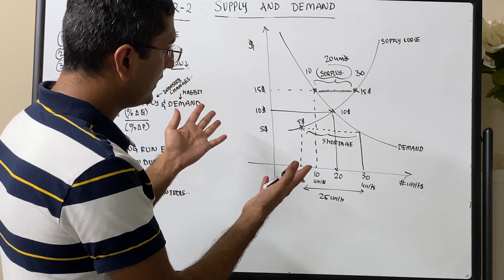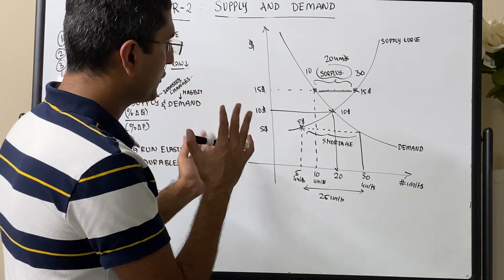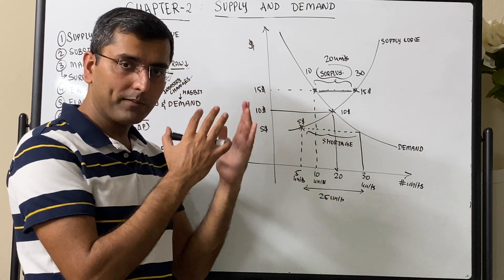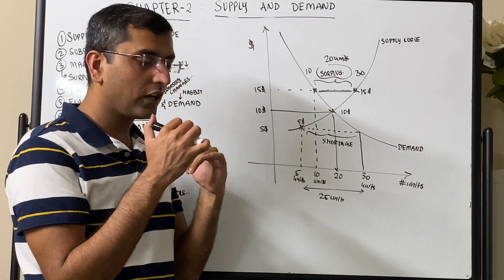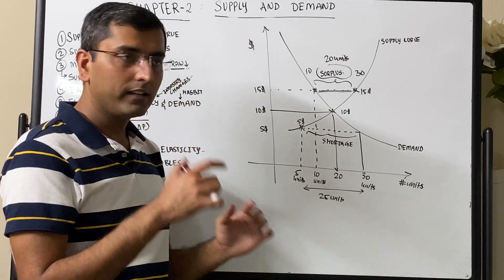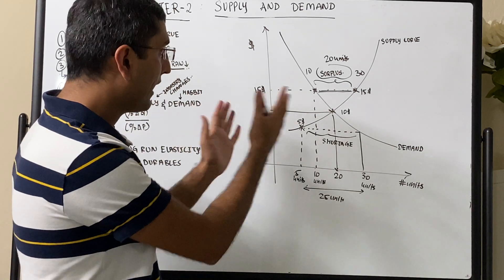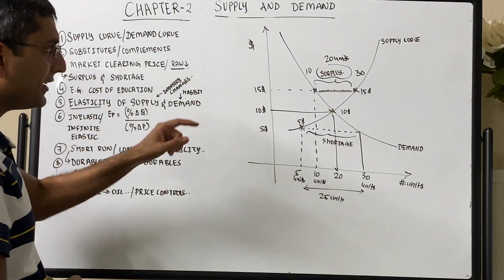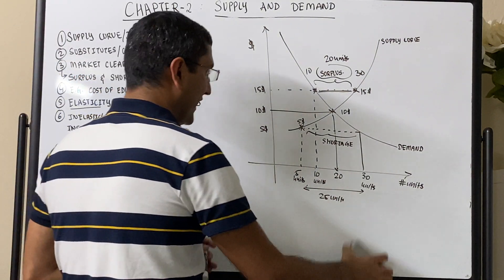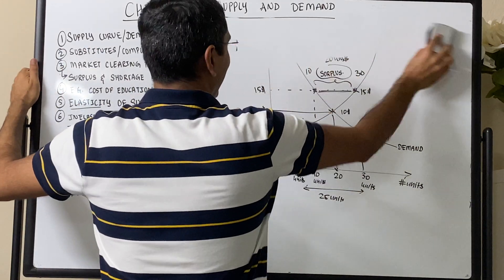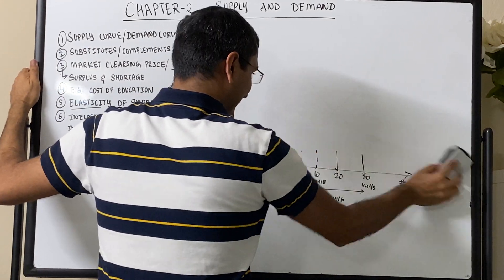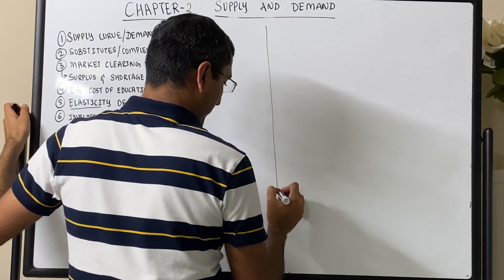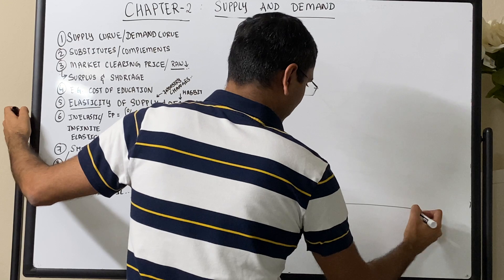With a basic understanding of demand curve, supply curve, shortages, surpluses, and whether something is a substitute or a complement, it's very important to be able to graph all of this. Now let's take a real-life example — the cost of education in the United States — and draw the same supply and demand.